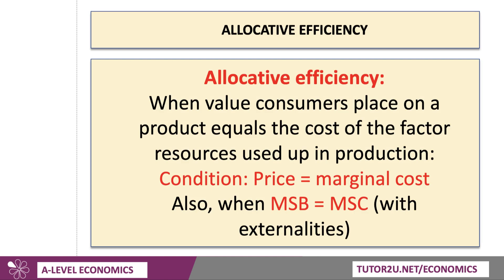Quick reminder: allocative efficiency is essentially when the value consumers place on a good or service is in balance with the cost of the factor resources used up in production. Essentially, private marginal benefit equals private marginal cost, and the condition is that price charged should reflect the marginal cost of supply. You should also use this term in any question on externalities — there's an allocatively efficient equilibrium when the marginal social benefit equals the marginal social cost.